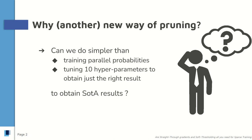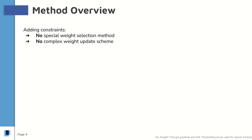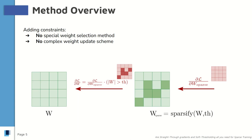Well, yes, we want to achieve this. So how do we go about it? We applied some constraints to ourselves to avoid looking too broadly at every possible method. The constraints we used were: no special weight selection methods and no complex weight update scheme. So for example, you have your weights, which are sparsified before being used in the network.